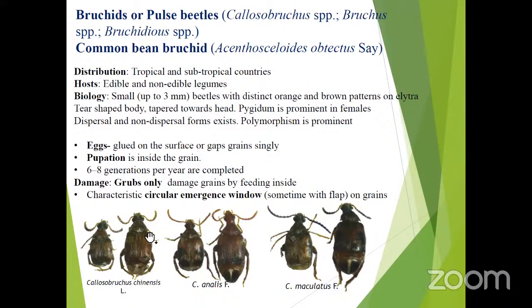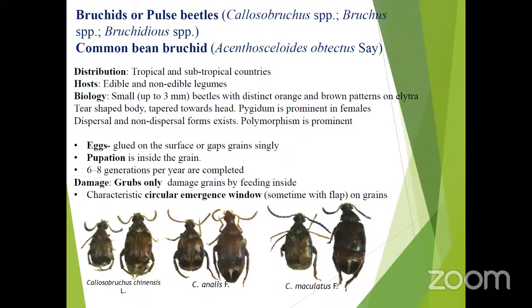There are several species of bruchids attacking stored pulses. Some come under the genus Callosobruchus, and others under Bruchus bruchidius. One species particularly found in the western and eastern Ghats of India in southern parts is Callosobruchus theobromae, which is now predominant in hilly areas like the Western Ghats.